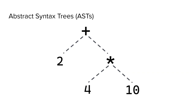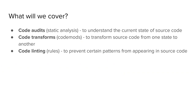This course will start by covering the fundamentals of ASTs — what they are and how they work. Once we're comfortable with ASTs, we'll start to explore several practical use cases, including code audits or static analysis to understand the current state of source code, code transforms or code mods to transform source code from one state to another, and finally code linting or rules to prevent certain patterns from appearing in source code. Most courses will build an app along the way, but we'll use a sample app, because this course is aimed at practical uses of ASTs for maintaining and refactoring code bases.